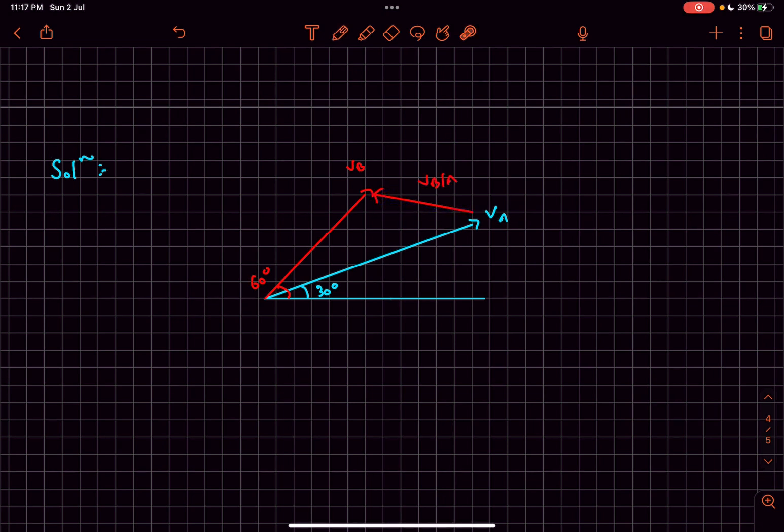Now if this vector has to be perpendicular to vA, then vA has to be smaller. We actually drew vA to be a bit larger, so let's reduce its length. If we reduce it by this much, now this is going to be velocity of B relative to A, and as you can see it's perpendicular to the line of motion of A.